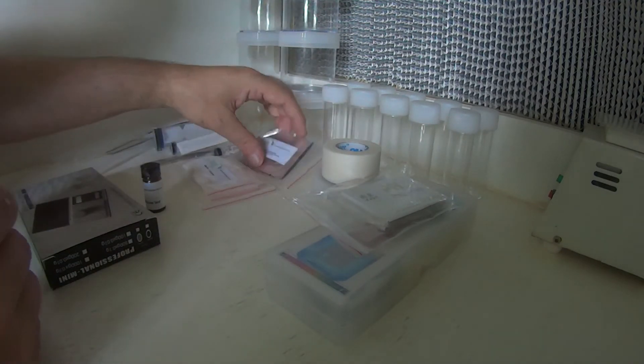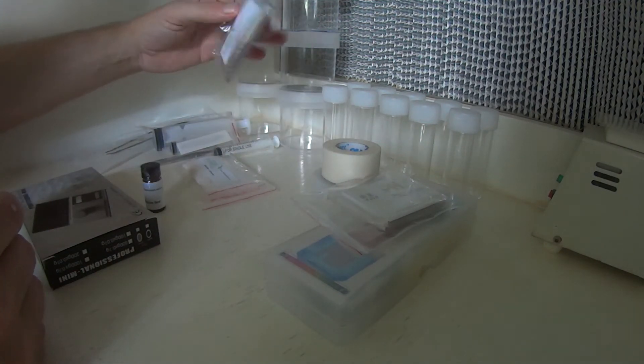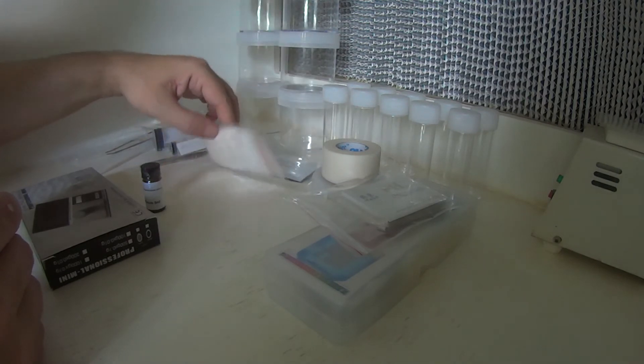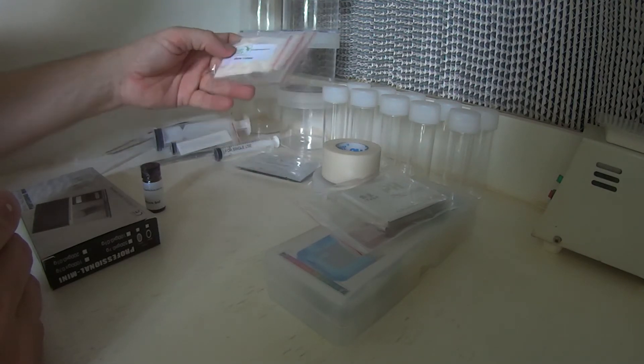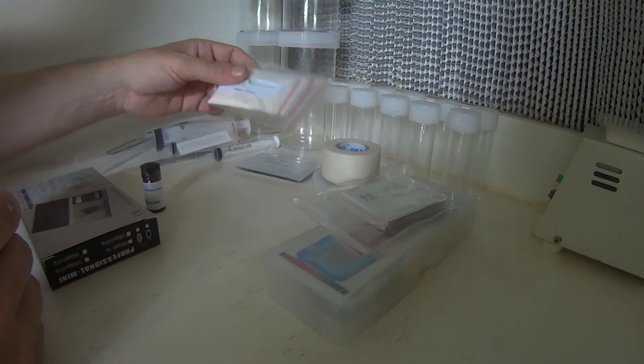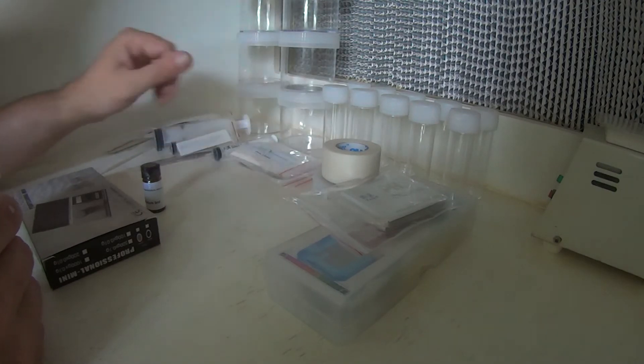In this kit, we also include three packets of MS salts. Each packet's enough to make one litre of media. We have three packets of Gel-Rite as well. One packet of MS to one packet of Gel-Rite and one litre of water, and you have a litre of media.